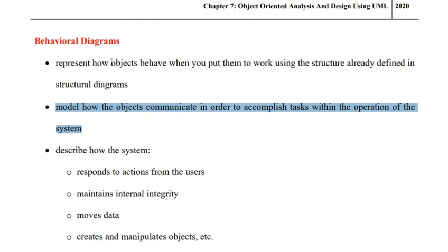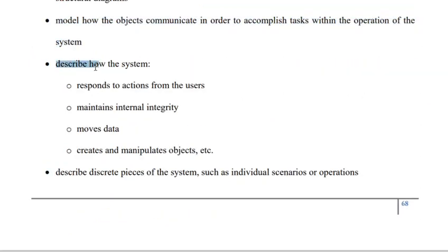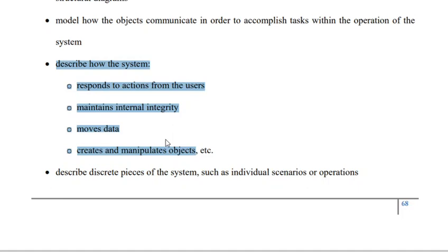A behavioral diagram is capable of representing the way how objects behave whenever they are put to work within the defined structure provided by the structural diagram. It models how objects communicate with one another to accomplish tasks within the operation of the system. A behavioral diagram describes how the system responds to the action of the user, how it maintains the internal integrity, how it moves data, and how it creates and manipulates objects.